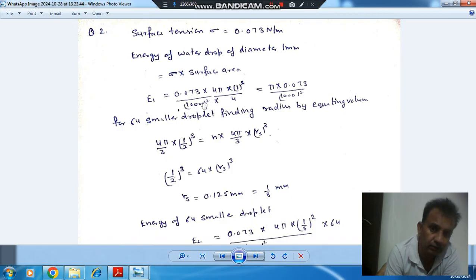As d is in mm, converting it to meters by dividing by 1000, the energy becomes π times 0.073 divided by 1000².